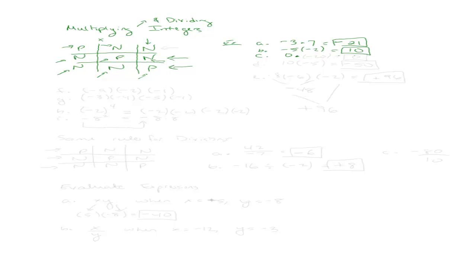Let's say we have 0 times negative 20. Remember the multiplication property of 0: any number times 0 is 0.